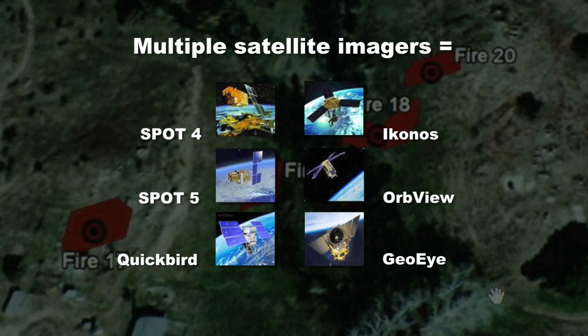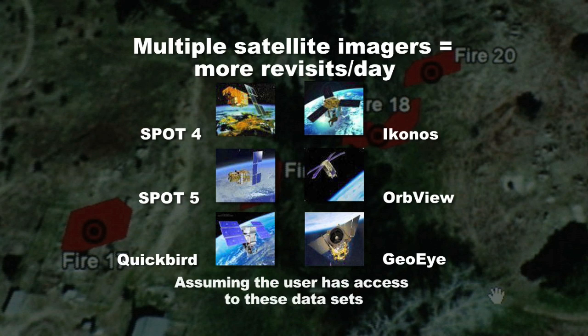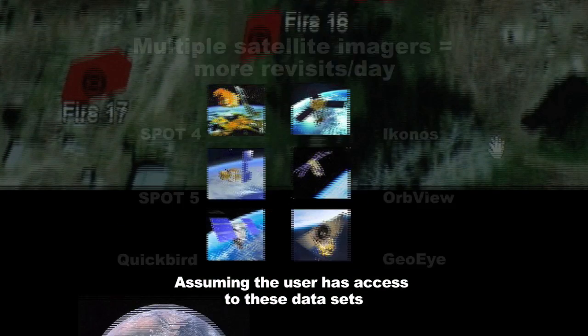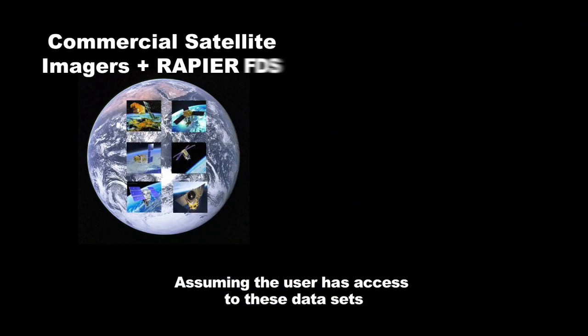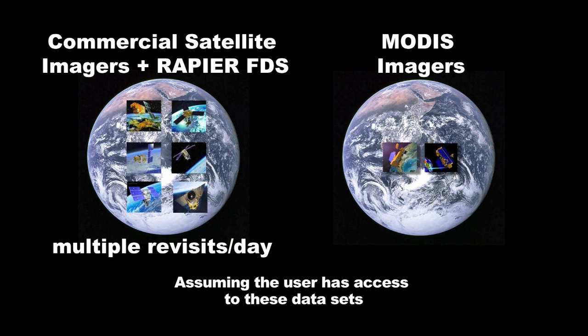Also, when you use a number of high-resolution imagers together as a constellation, they have more opportunities to image the same area in a given day, because it's not just one commercial imager that's going to give you the access rate you need to cover a situation like wildfires. You need to use multiple imagers together so that they are going over multiple times a day.